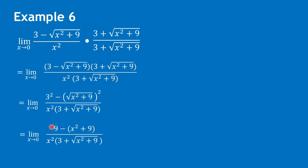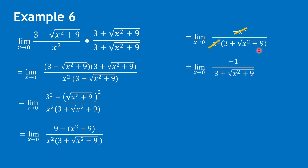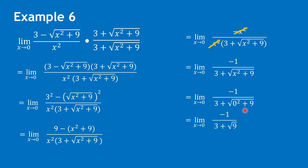Simplifying the numerator, we have 9 minus x squared minus 9. Distributing the negative 1 gives negative x squared. We can cancel x squared, leaving us the limit of negative 1 over 3 plus the square root of x squared plus 9. Substituting 0 for x, the square root of 9 is 3, so we have negative 1 over 3 plus 3, which gives negative 1 over 6.